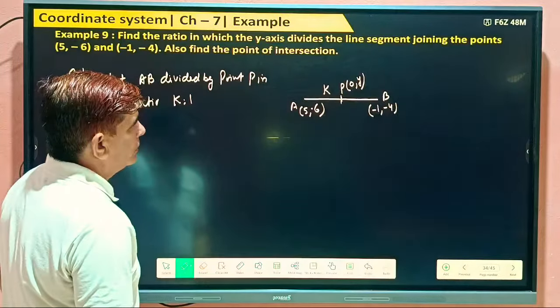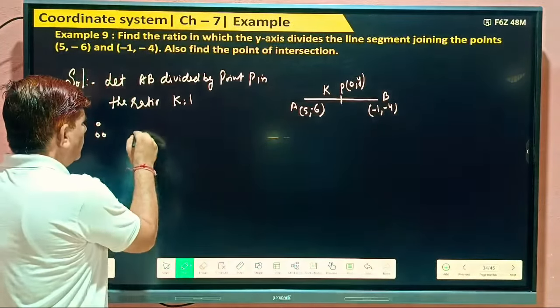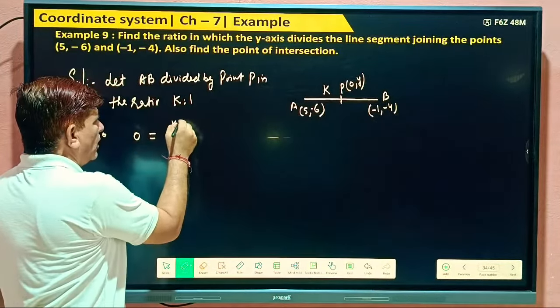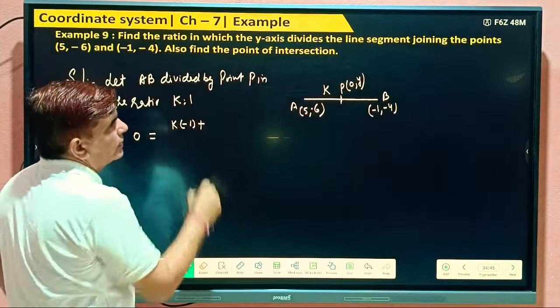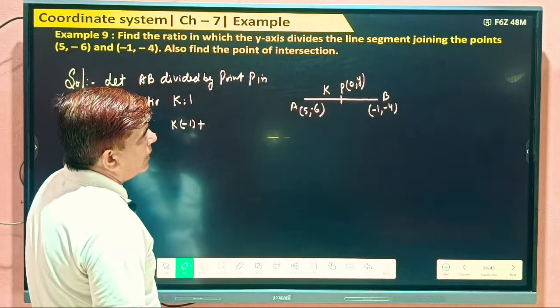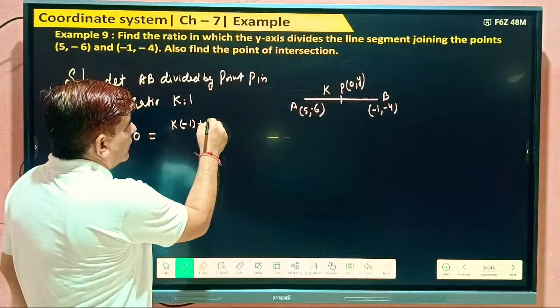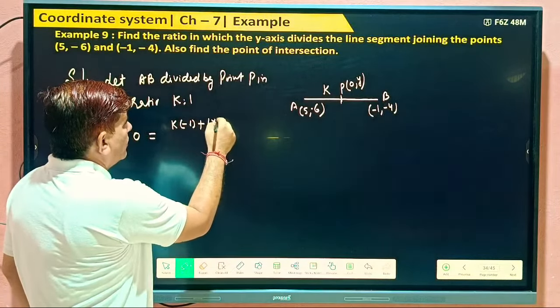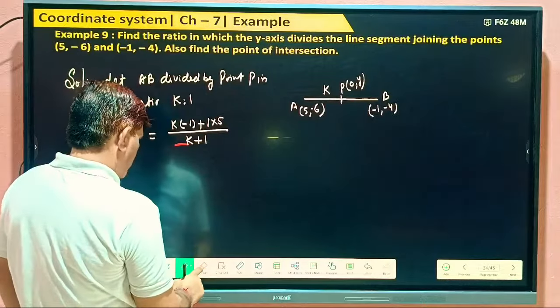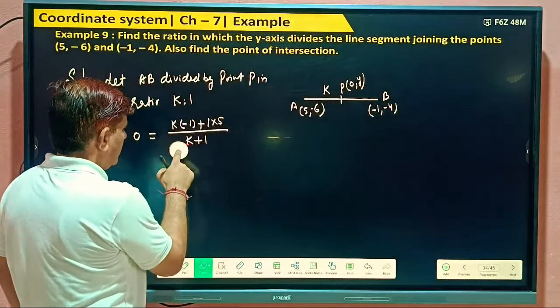So find out what we can find out. 0 equal to K into minus 1, K into minus 1 plus, plus what? Y1 into 5 by K plus 1. What's K plus? 1.